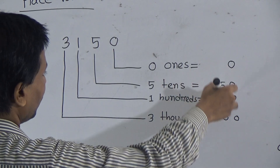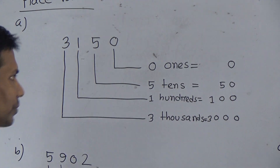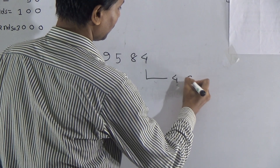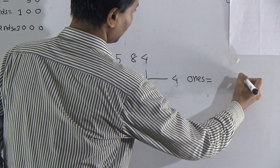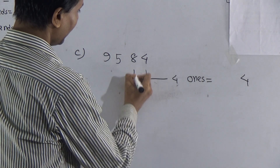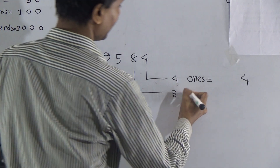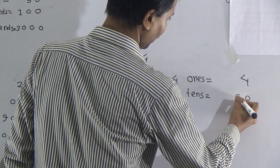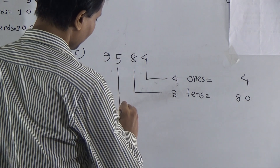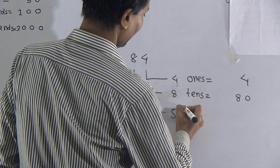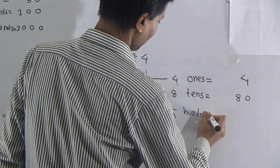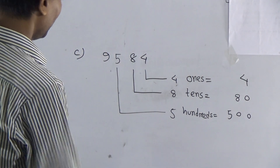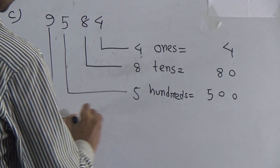Similarly, this C problem also — see, this is the ones place, then the tens place, then the hundreds place, and this is the thousands place. Now this is 4 — that means four ones equals 4. Then 8 — eight tens. T-E-N-S. You maintain the sequence: give zero then 8. Then five — five hundreds.